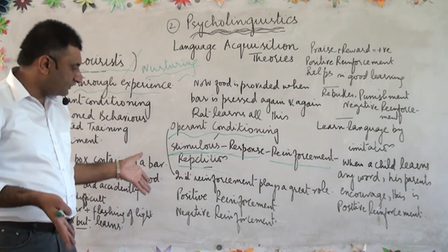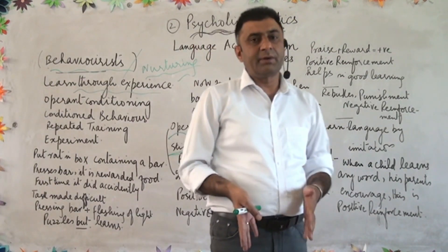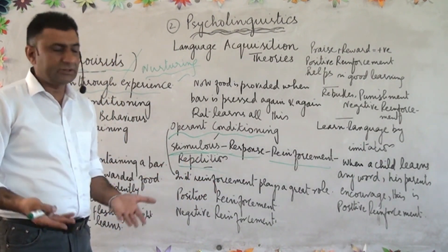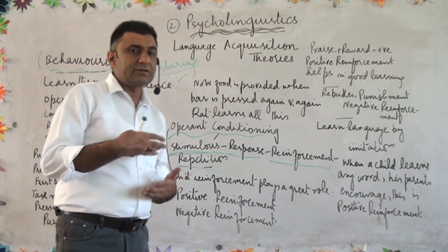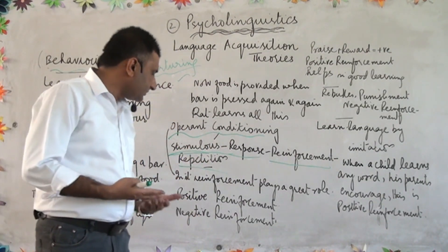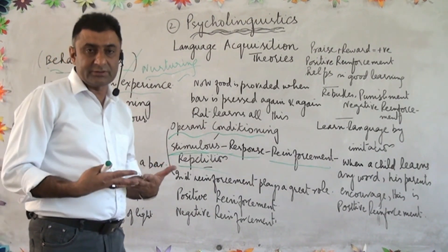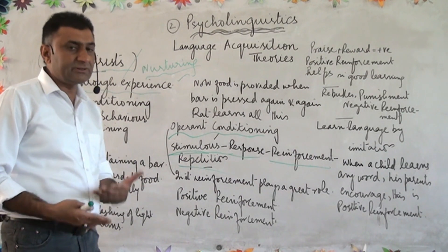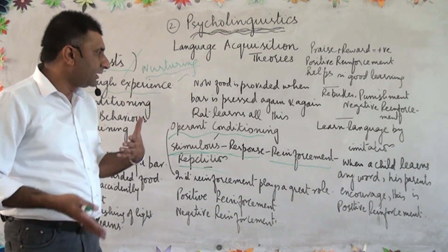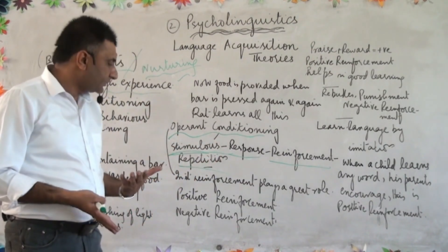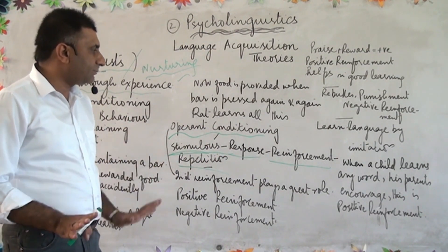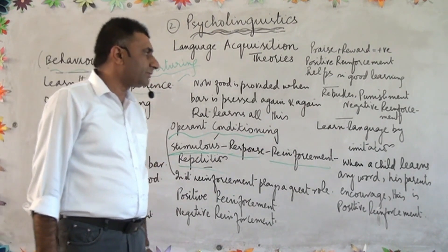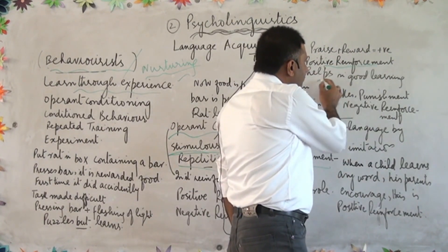Positive and negative reinforcement are very important not only in language learning but in the life of every person. Whenever a person does something good and is rewarded, praised, or encouraged, there is positive reinforcement and the result will be more and more positive. If there is negative reinforcement — constant criticism, rebuking, or punishment — the result will be zero. According to this theory, a child learns from behavior, and positive reinforcement is very important for good learning.